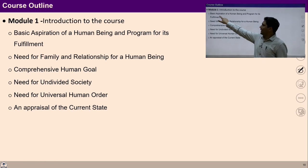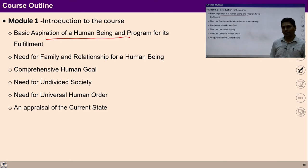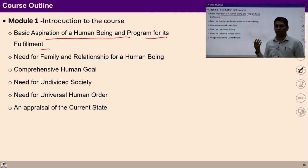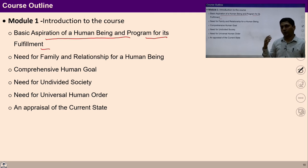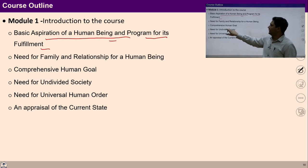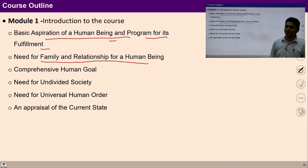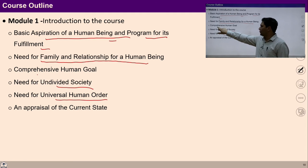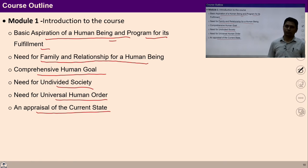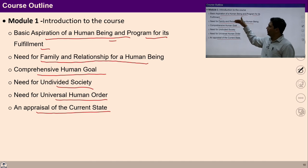In module 1, we would talk about basic aspirations of human beings and the program for their fulfillment. Though we have been studying this from UHV 1, UHV 2, and UHV 3, in this course we will see our basic aspirations from the point of view of society and social structures. We will study the need for relationship, need for undivided society, need for universal human order, and study in detail the comprehensive human goal. We will also critically evaluate the current state of society.